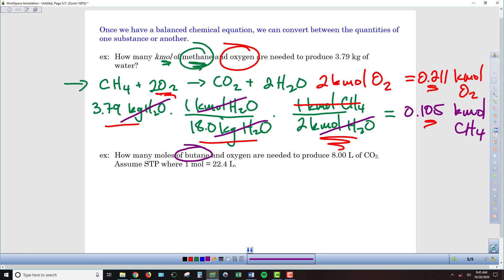In our second example, we're going back to the butane combustion, which was 2 moles of the butane plus 13 moles of the oxygen yielded 8 moles of the carbon dioxide plus 10 of the water.